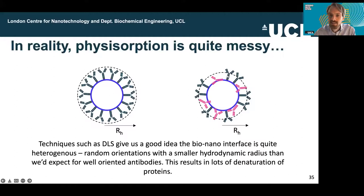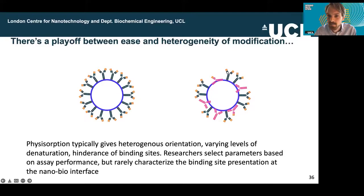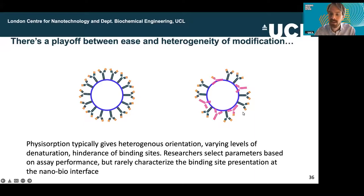In reality, physisorption is quite messy, and DLS is great for revealing this. If antibodies were all oriented end-on, we might expect a certain hydrodynamic diameter or radius. But we rarely see that — only under certain conditions can we push the proteins to orient correctly. Because we've got a mix of side-on and end-on antibodies, the effective hydrodynamic size is smaller than it would be with theoretical oriented attachment. What does this mean for our particles? Antibodies bound sideways or flat are obscuring their FAB binding sites. We have fewer binding sites than we'd like — and as we know from mass transport models, that means the association rate of the particle to an analyte is less, and the likelihood of successful collisions is less.